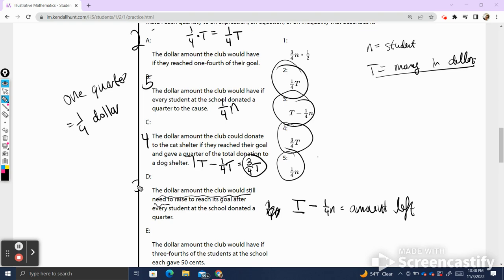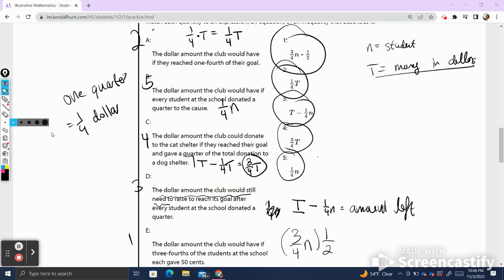Finally, let's go ahead to E. The dollar amount the club would have if three fourths of the students each gave 50 cents. So if three quarters of the students each gave 50 cents, and we're going to call this a half a dollar, that would give us the amount of money that was donated. One shows us that same form of expression, and so that is our answer for E. If you need some extra practice, and you're watching this video first, I recommend you going back to part one, which has another example that's quite similar. Let's keep going.